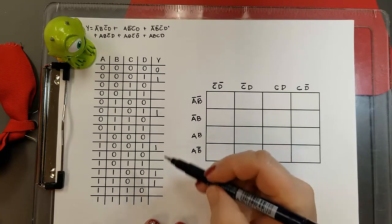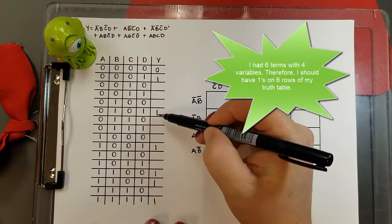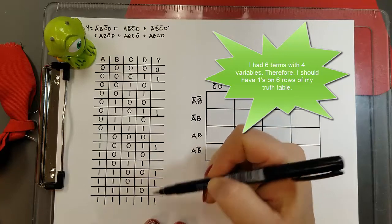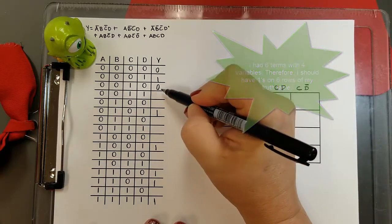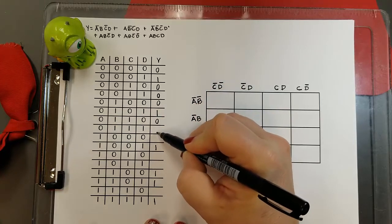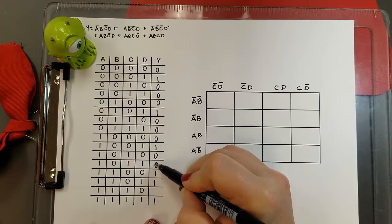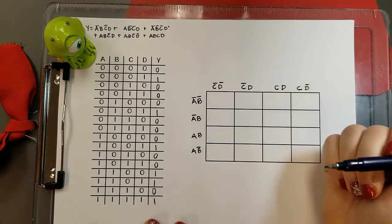And finally, I have A, B, C, D. So once I have all those entered, I check to be sure I had six 1s, and then I go back in and fill in all of my 0s. And once I've done that, I have my truth table complete.